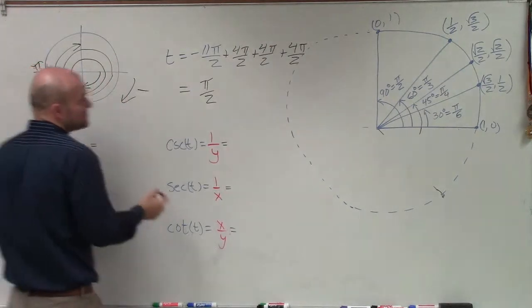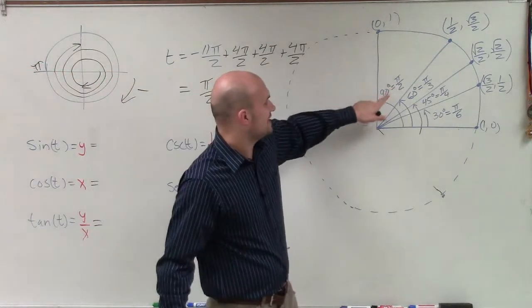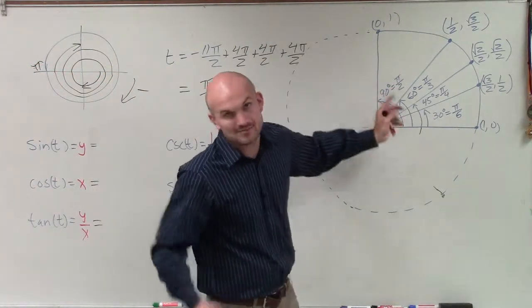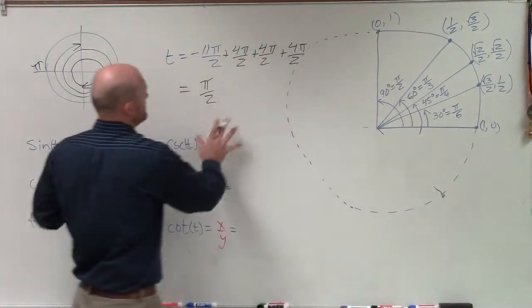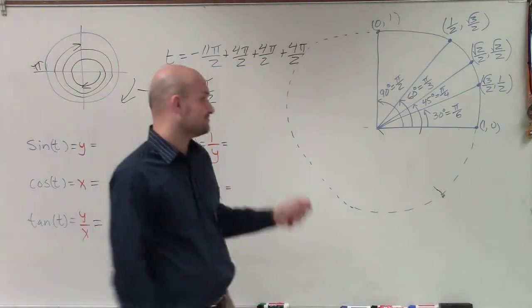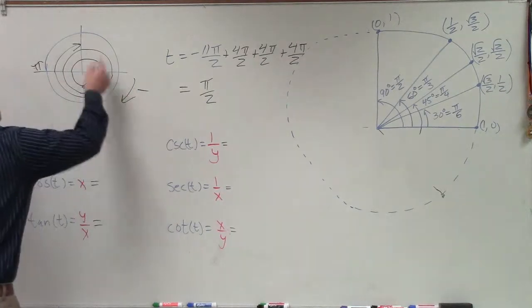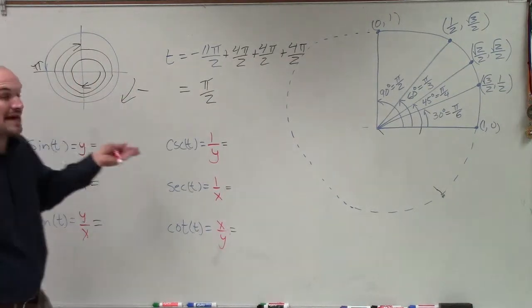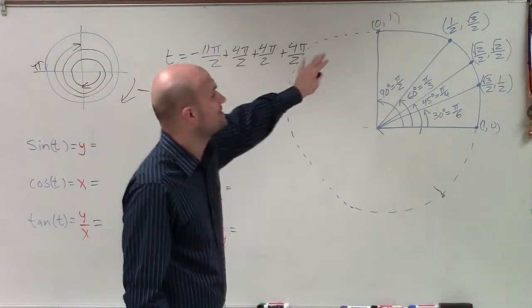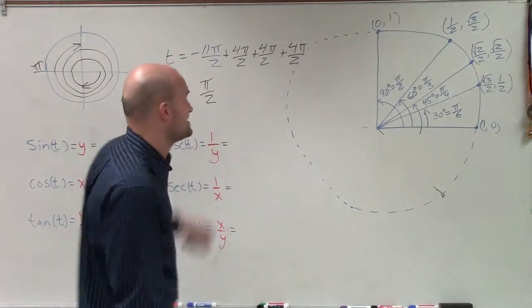If you graph pi over 2, you can see that's 90 degrees or pi over 2, which is right there. So you can either do this algebraically by determining coterminal angles, or if you really like graphing, you can do it that way. Either way, we have our point where our angle crosses the unit circle at 0 comma 1.